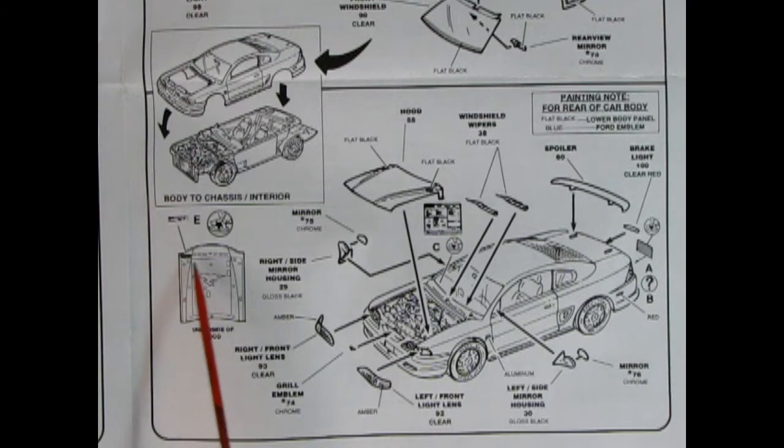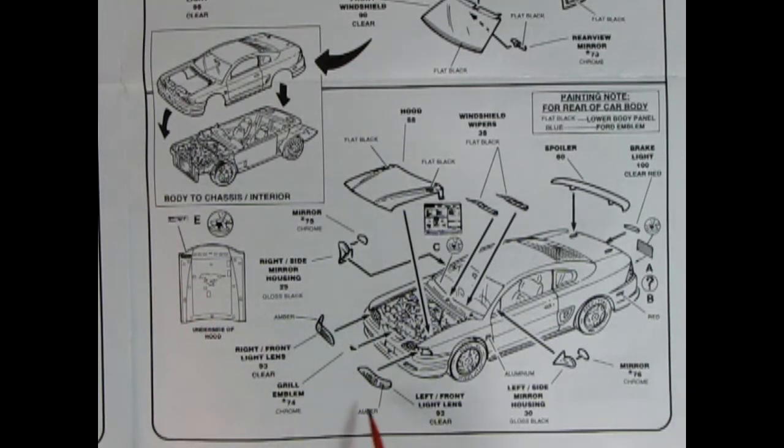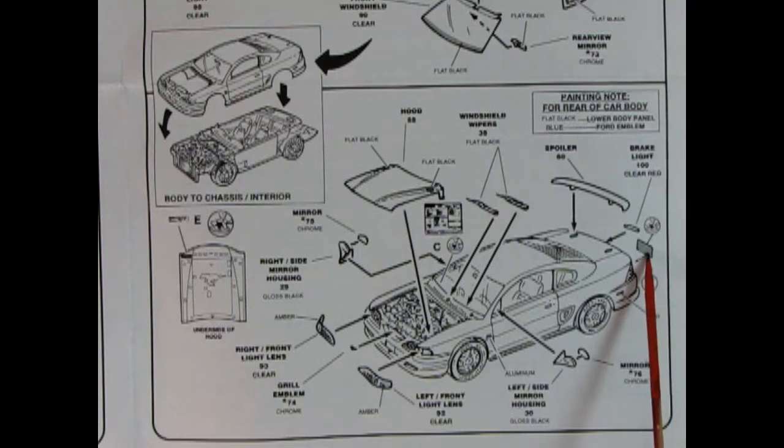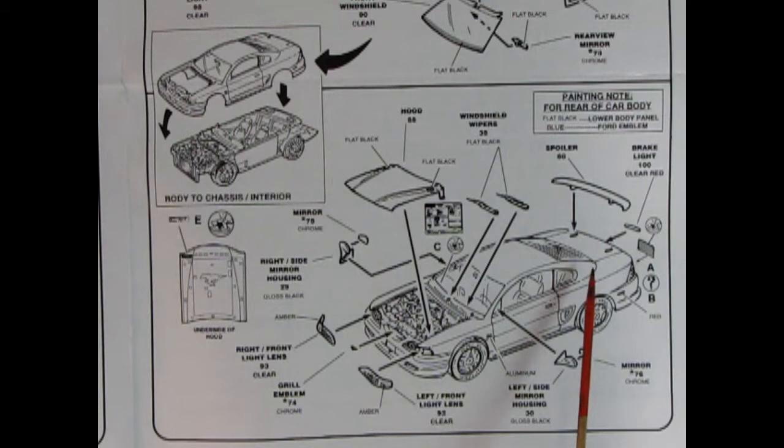Then we have our hood being dropped in. Underneath we have a decal there. There's our front headlamps going in. A little Mustang grille emblem right in there. Then our right and left hand side mirrors with the chrome piece hooking in. We've got a decal for our license plate. A rear tail lamp that's in here. Clear red. Spoiler dropping on. And our windshield wipers.